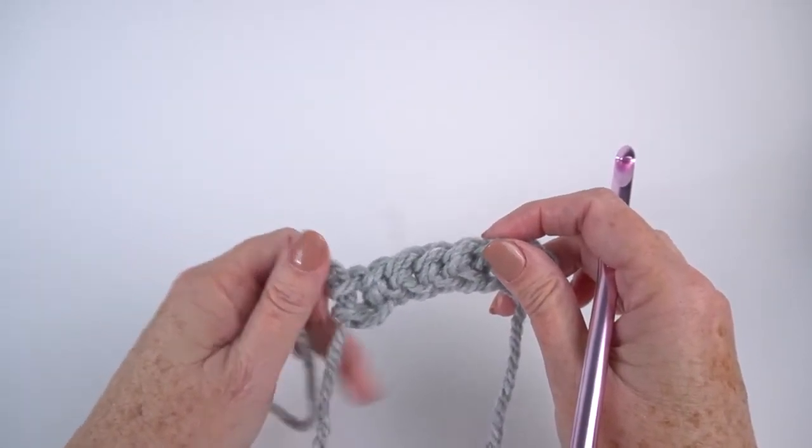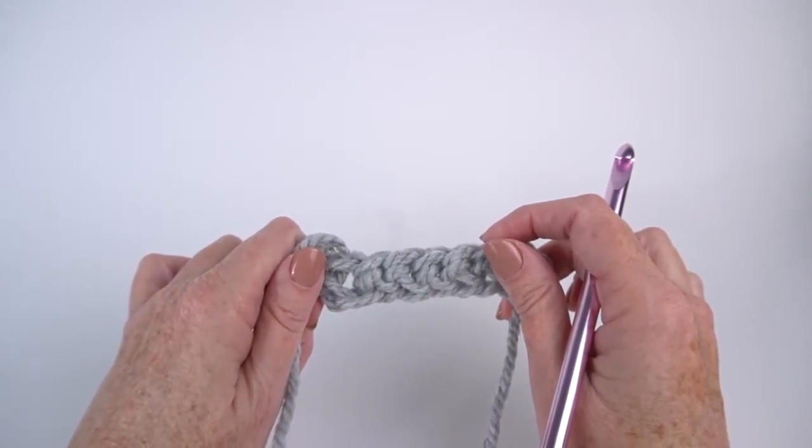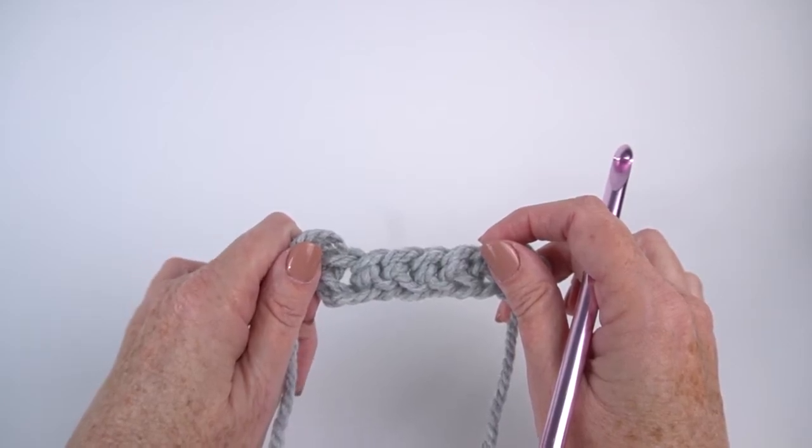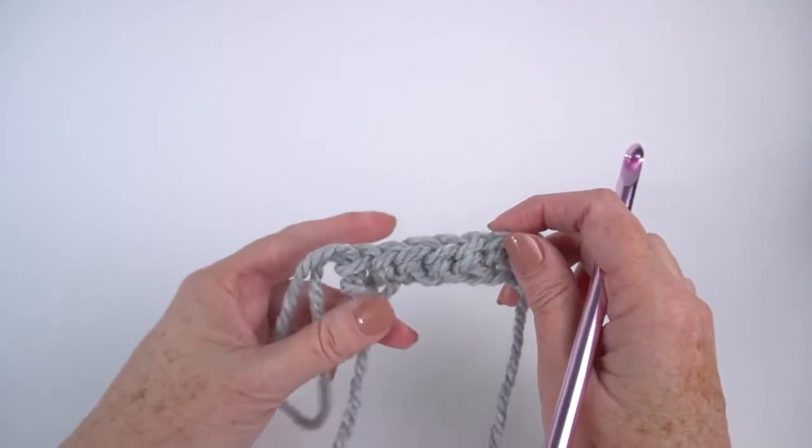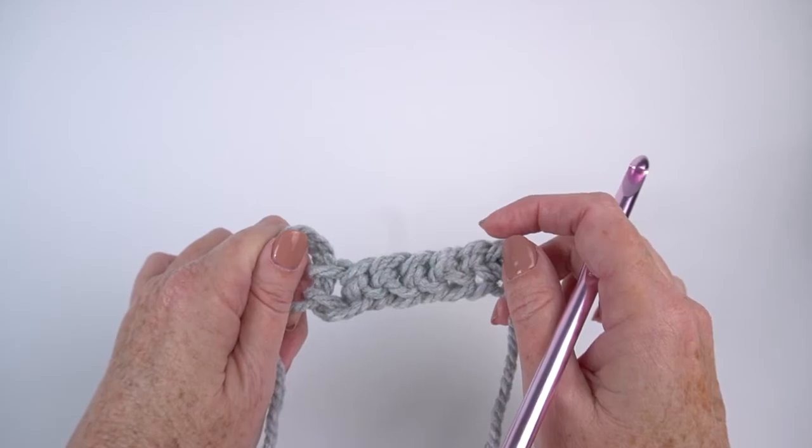Now, is foundation single crochet the only stitch you can use in the foundation technique? No, it is not. You could do foundation half doubles. You could do foundation doubles. You can do foundation anything you want to do. But this is the foundation single crochet. And once you get the hang of this, it's a super easy technique to use in other projects, and with other stitches. Now, just to make things even more interesting, now that you have learned the technical parameters of the foundation single crochet, you could also do a foundation half double. You could do a foundation double. You can do any number of stitches in the foundation style, now that you know how to use that foundation single crochet.